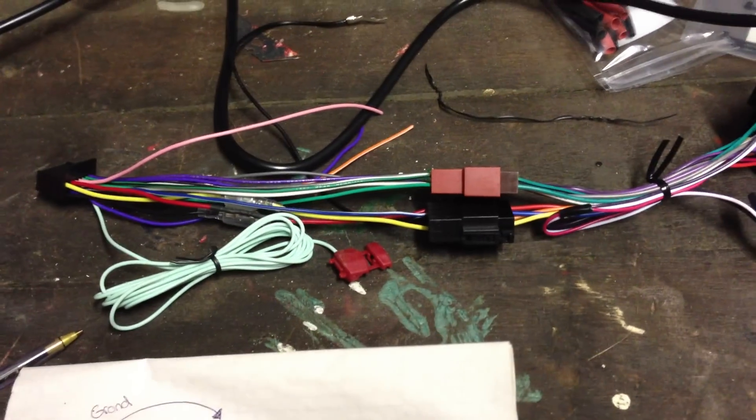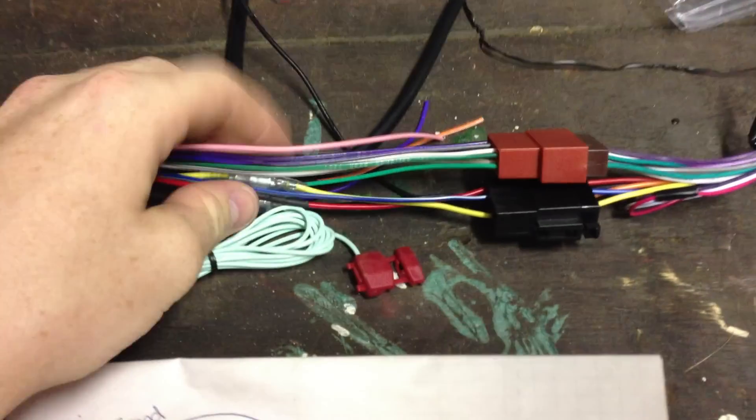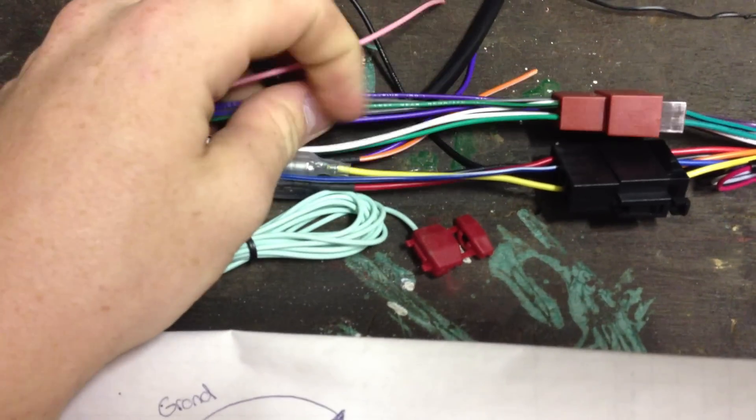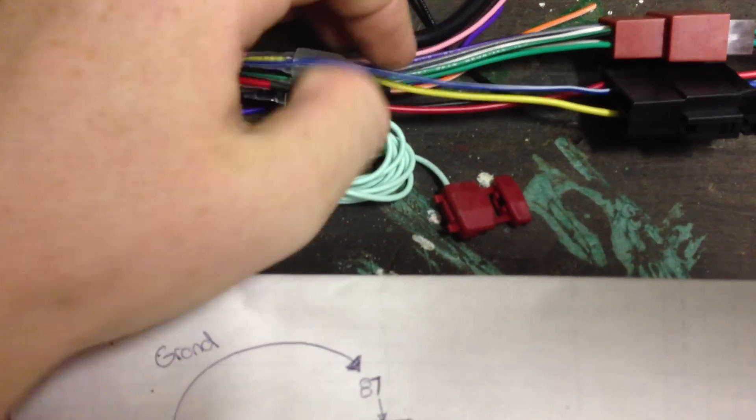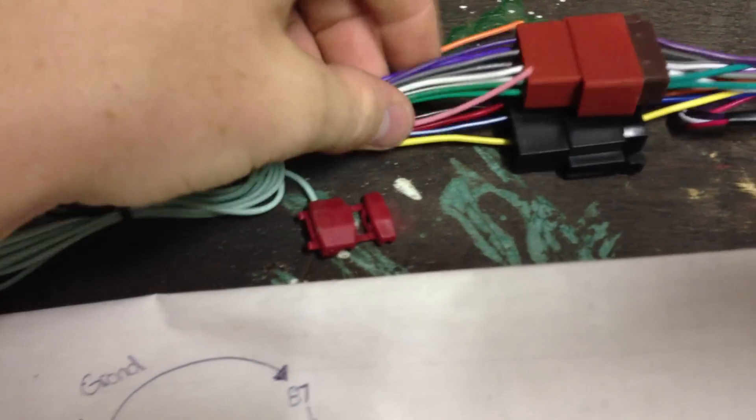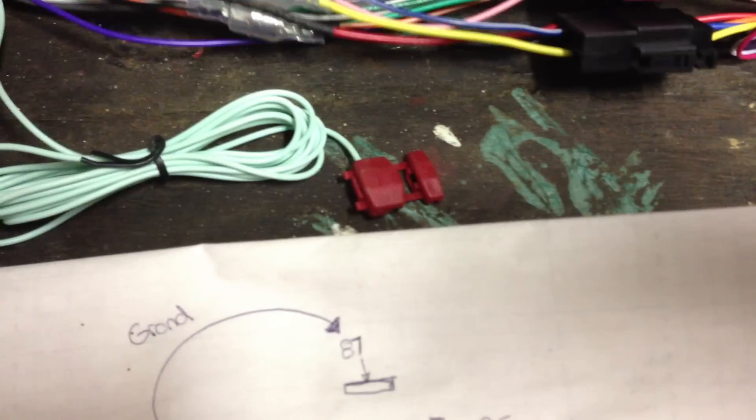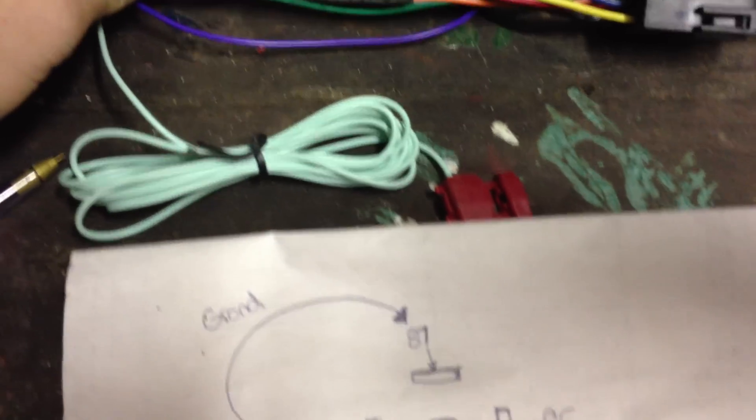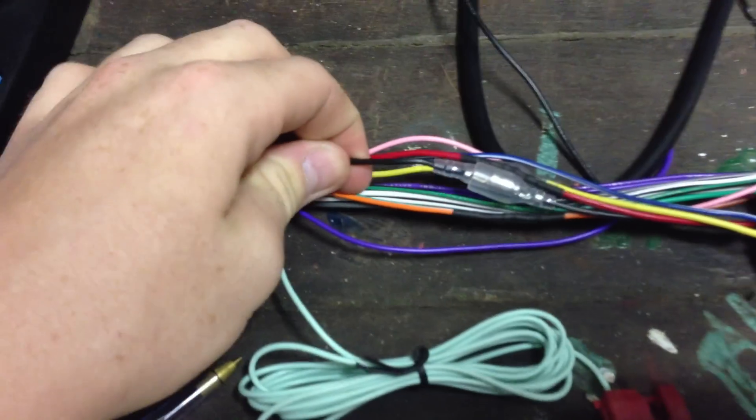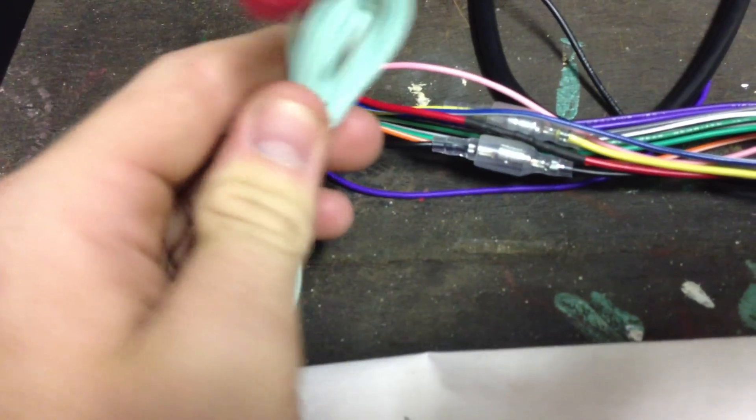Here's my wiring harness right here, this is for my steering wheel control so it's pretty complicated. But here's my blue wire which is my remote, my black wire is right here, and then my emergency brake wire is right here.